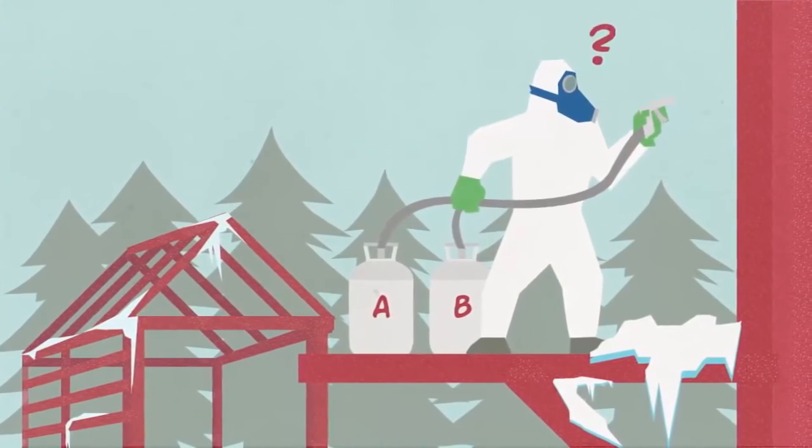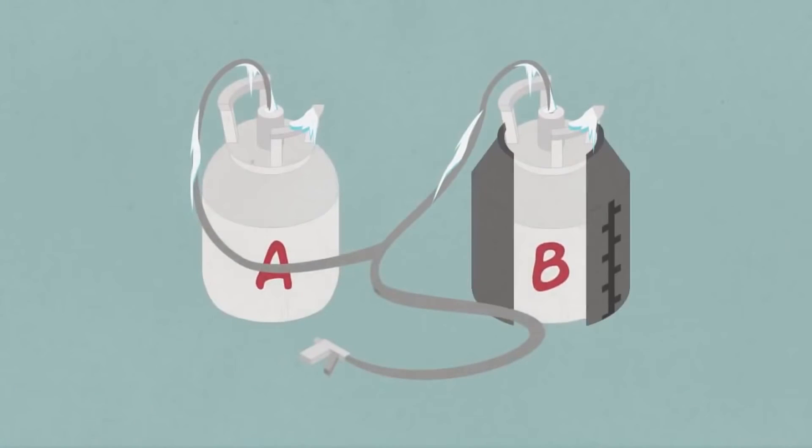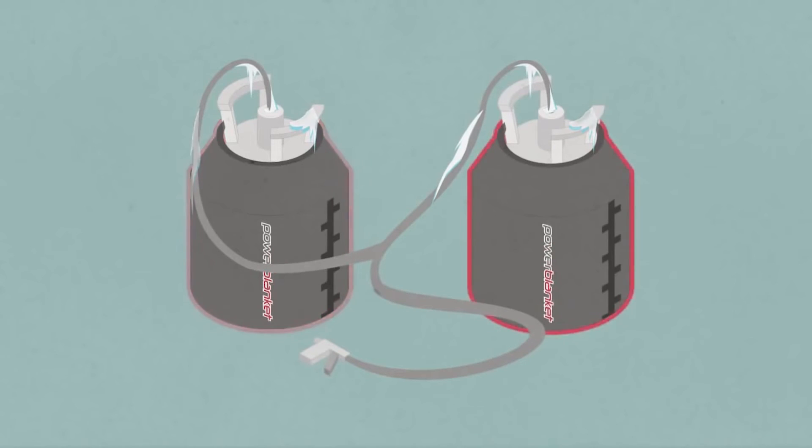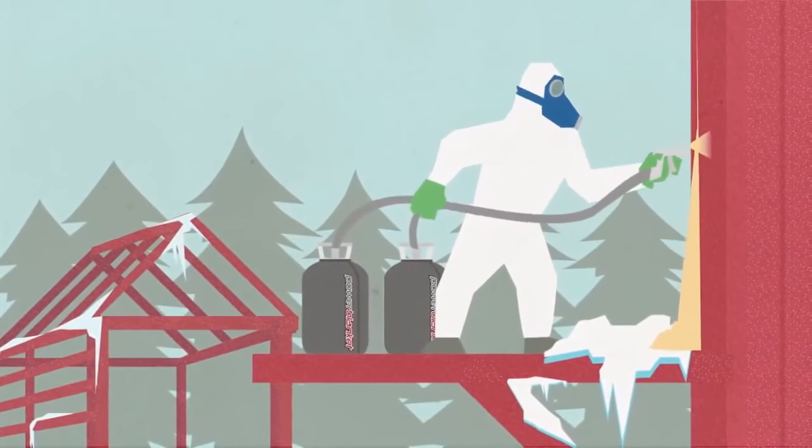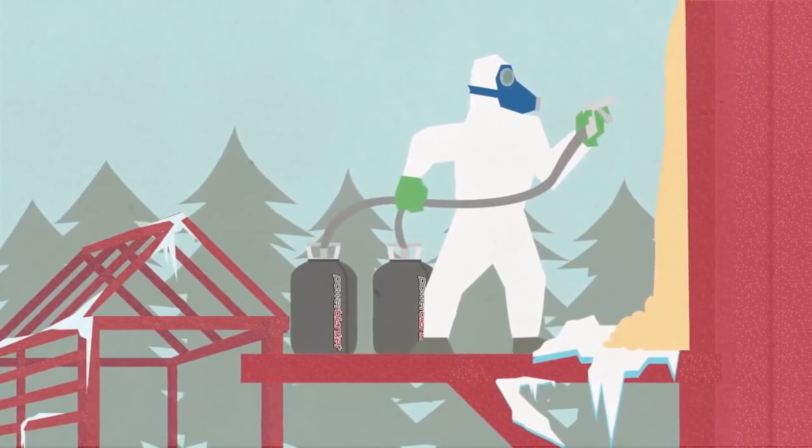Polyurethane spray foam is highly temperature sensitive. Power Blanket heaters keep spray foam containers heated to the perfect temperature, allowing higher yields, fewer delays, and decreased product waste.